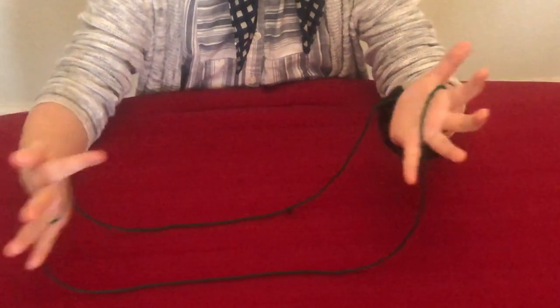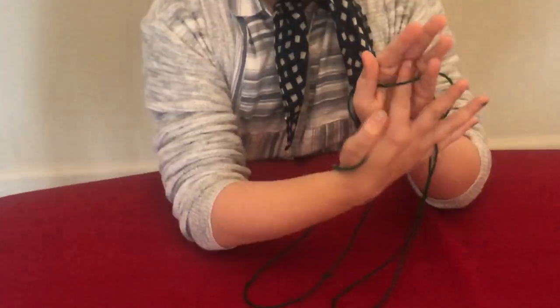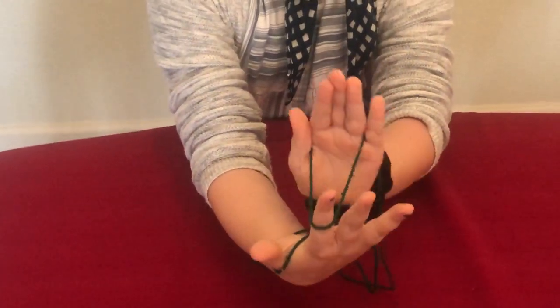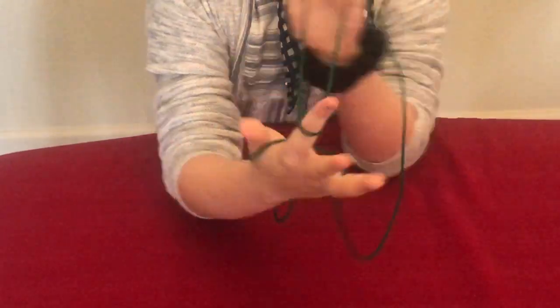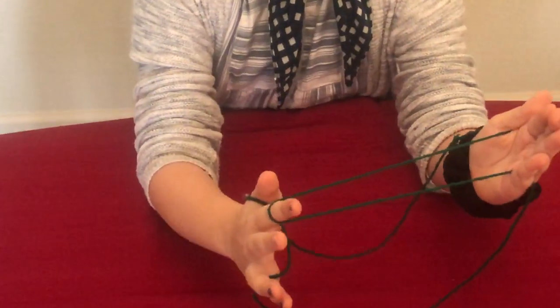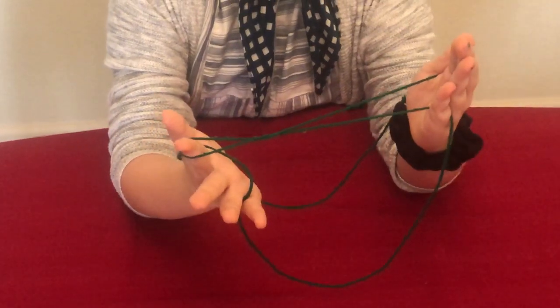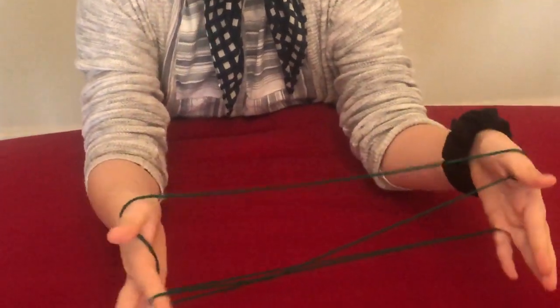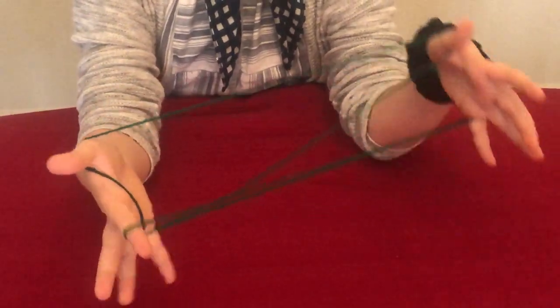Then you're going to take your pointer finger and take it and go like that. You're going to get it this far away and then you're going to twist your pointer finger so it should have a string like that, and then pull it so that it should look like that.